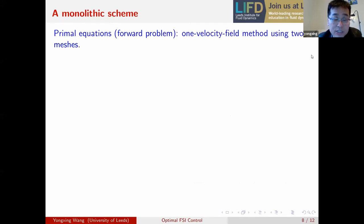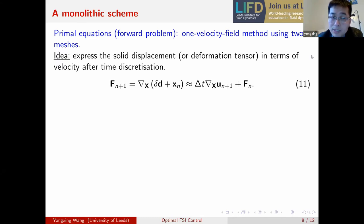So this is the so-called monolithic scheme. We solve the whole system, the primary variables, the adjoint variables in a whole big system. Previously, we developed the so-called one velocity field method using two meshes for the forward problem only for the fluid structure interaction problem. So the idea is to express the solid displacement or the deformation tensor in terms of velocity after time discretization. We actually have already done this in the previous slides when we write down the Lagrange functional. So we end up with a one velocity field.